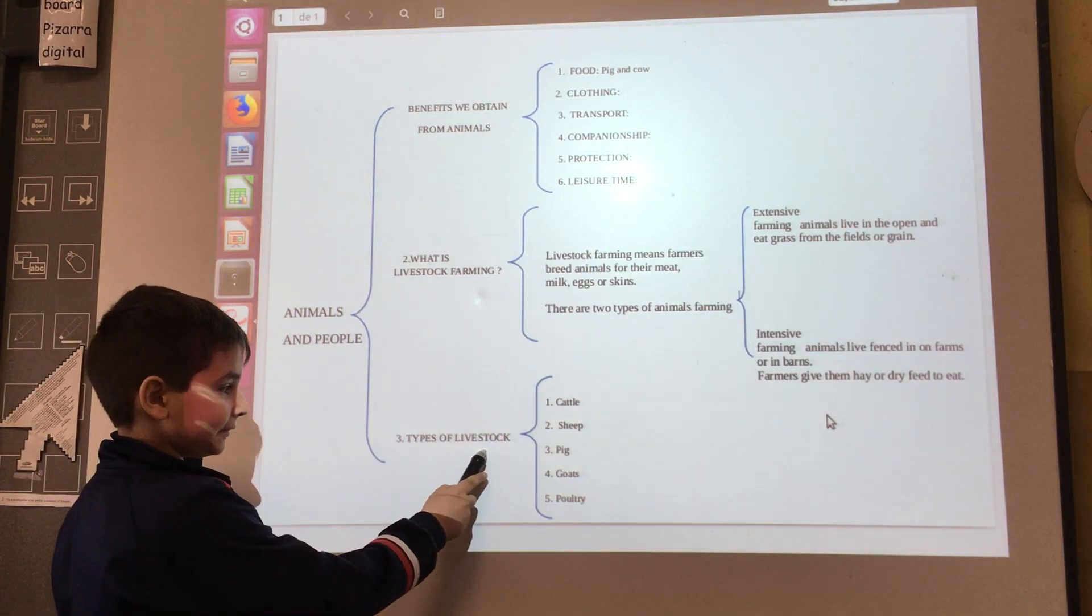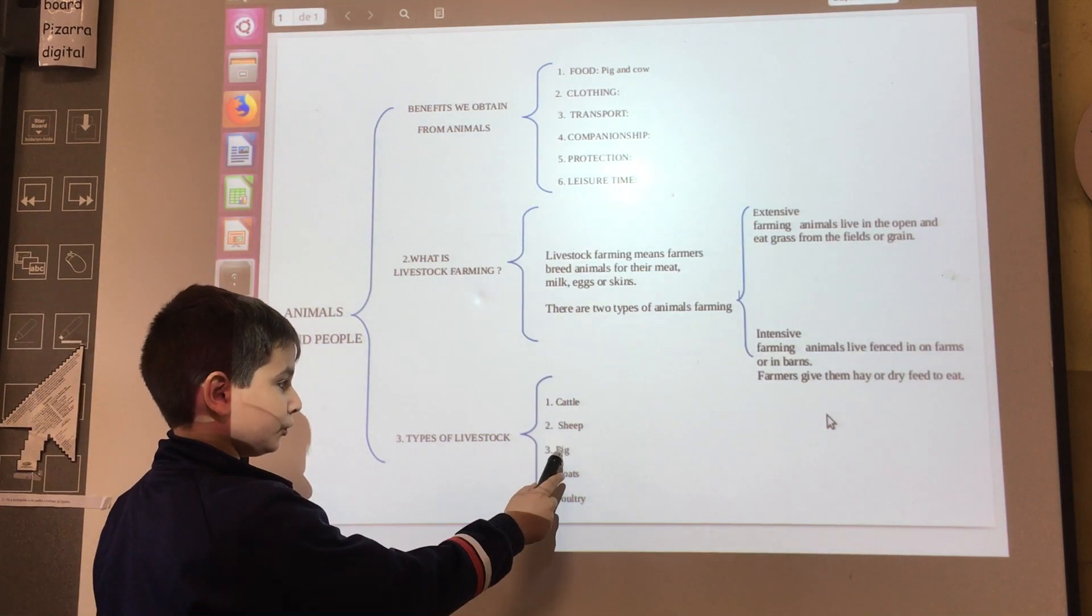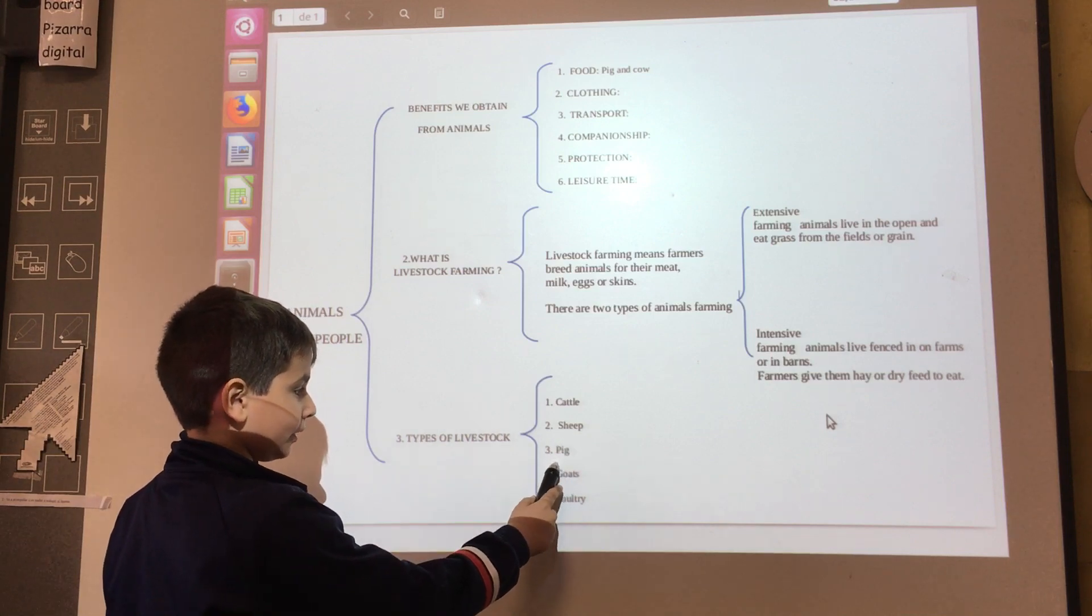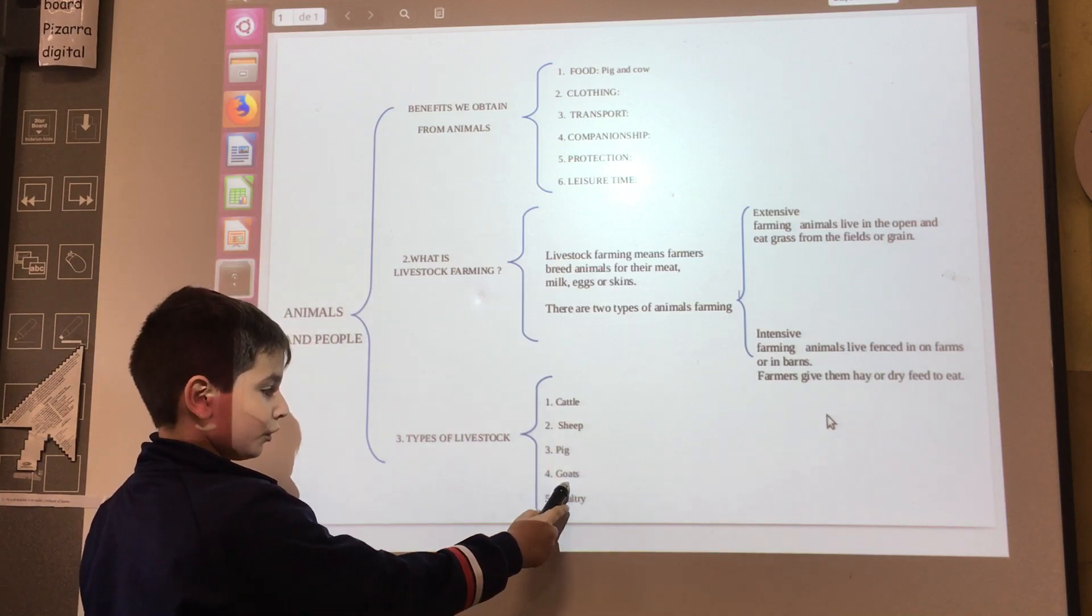Three types of livestock: One, cattle. Two, sheep. Three, pig. Four, goats. Five, poultry.